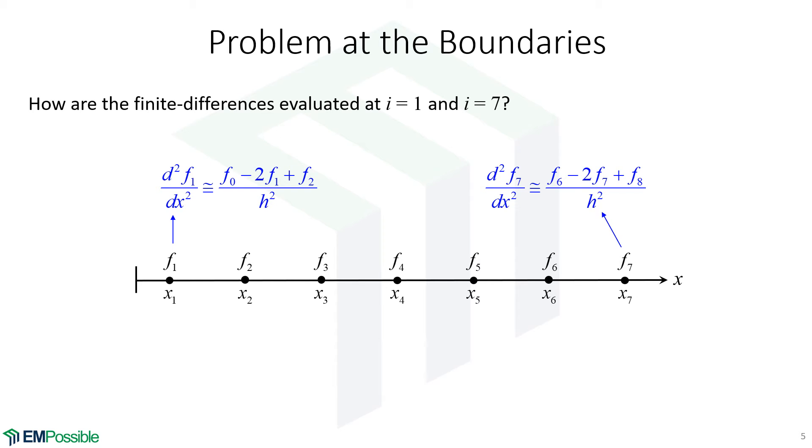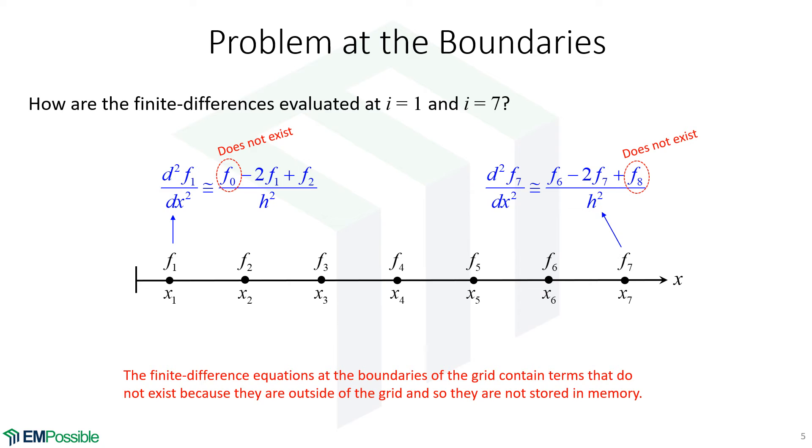At the other side of the grid, at the seventh point, the finite difference would be F6 minus 2 times F7 plus F8. And F8 is out here and doesn't actually exist. So that's the problem. We need an F0 and an F8. They don't exist.